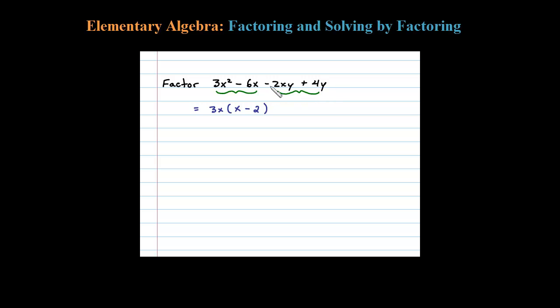I'm going to actually factor out a negative 2y. When you factor out a negative 2y for the first term, I'll be left with X, and when you factor a negative out of a positive term, you're going to be left with minus 2.